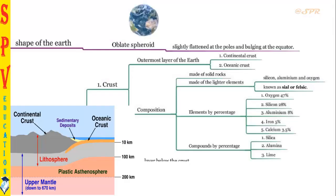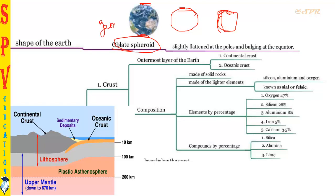Now we shall see what is the shape of the Earth. The Earth is not a perfect circular shape — it is in the shape of an apple. The top and south, meaning the north pole and south pole, will be a little flat. It is an oblate shape, also called geoid shape. The Earth is slightly flattened at the poles and bulging at the equator — the equator will be a little bulgy. This is the original shape of the Earth.